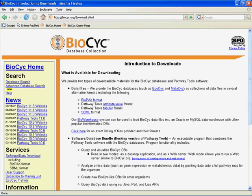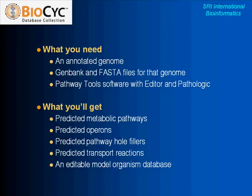Once you have your copy of Pathway Tools installed on your local computer, you can go ahead and make model organism databases. So once you have the software, a genome, and the files for that genome, you'll put them together — and what will you get out? You'll run that genome into Pathway Tools and out of it you'll get predicted metabolic pathways, predicted operons, predicted pathway hole fillers, predicted transport reactions, and an editable model organism database for your organism of interest.